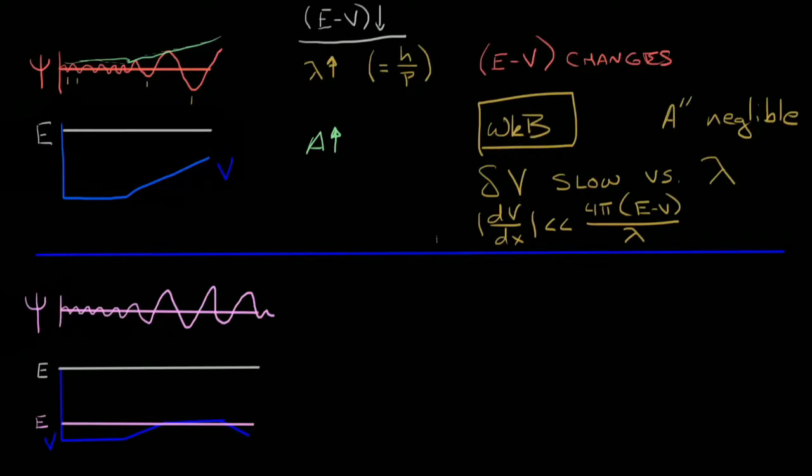In our last session, we found that if we assume that our change in the potential was really small in comparison to the frequency of the wave function, we can make some assumptions about what the form of the wave function solution looked like, and we found that the wave function equals c over root p e to the i over h-bar integral of p dx, where p represents momentum and is a function of x.